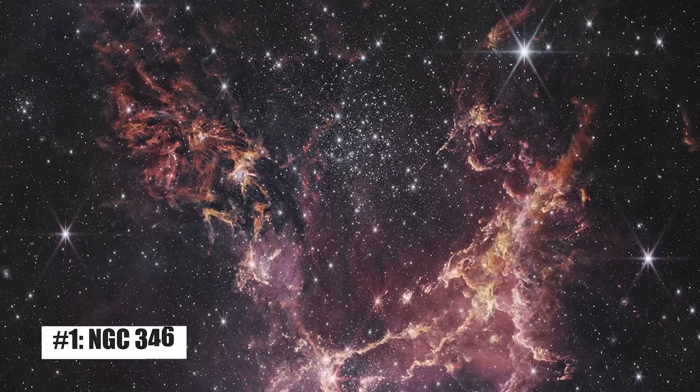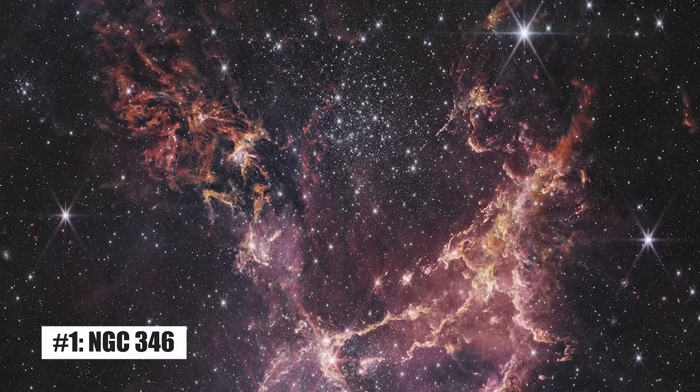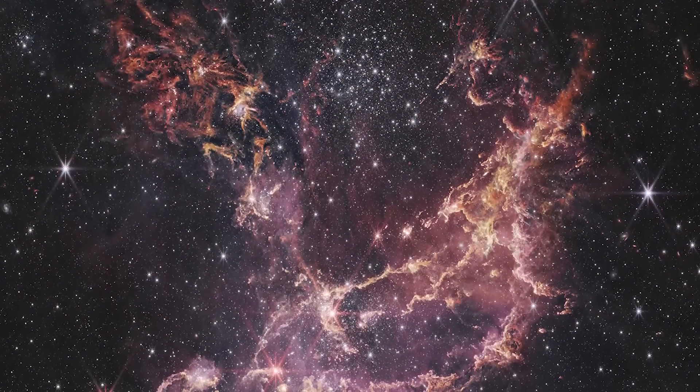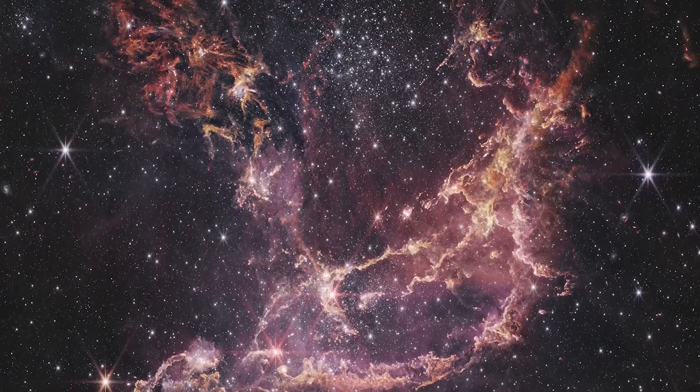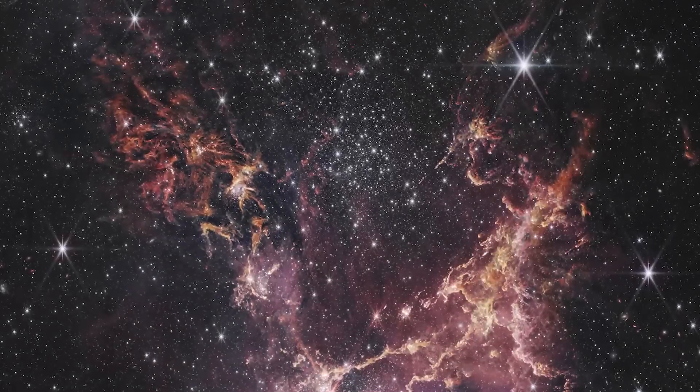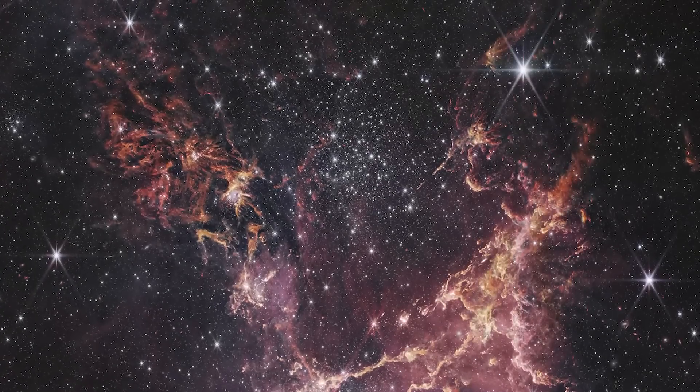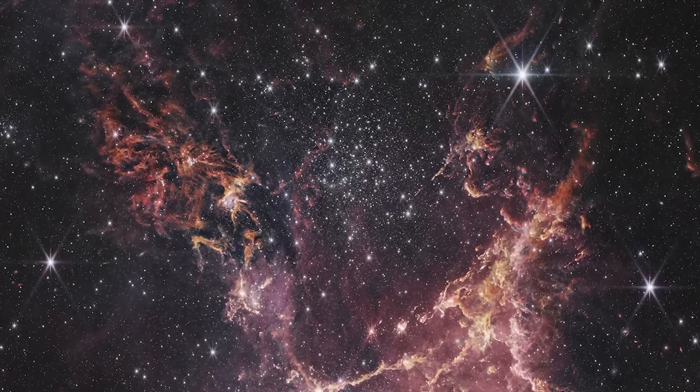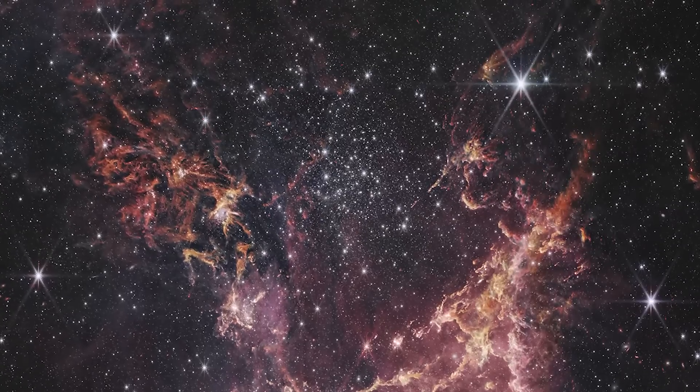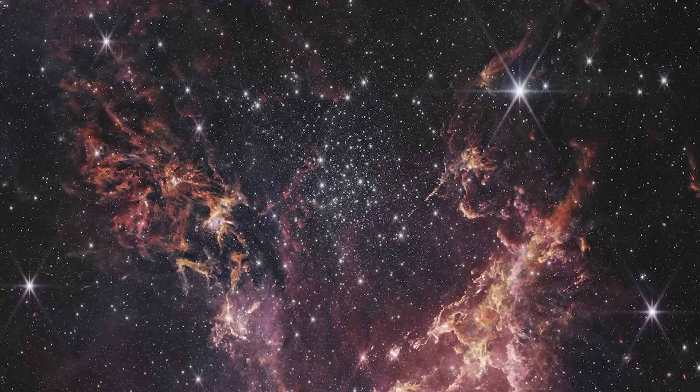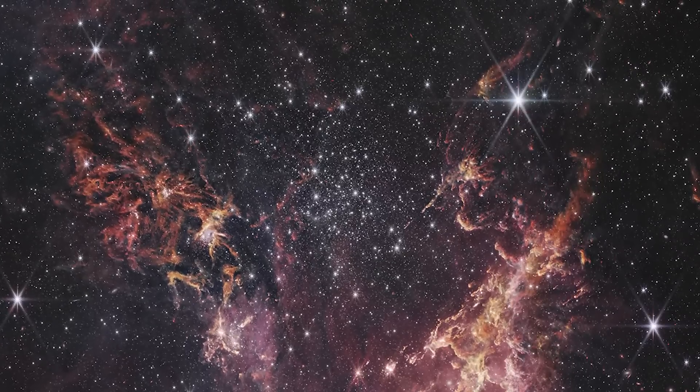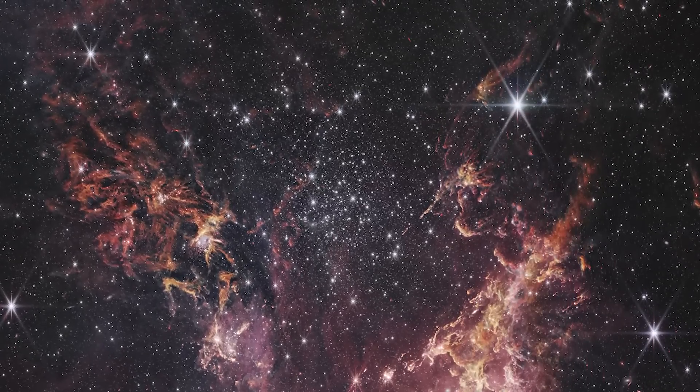Number 1. NGC 346. This image of NGC 346 was captured by NASA's James Webb Space Telescope's near-infrared camera, NERCAM. NGC 346 is a young star cluster located with a nebula 200,000 light-years distant. Webb reveals a much larger supply of building blocks than was previously thought to exist, including clouds rich in dust and hydrogen, which can be used to construct not only stars, but also planets.